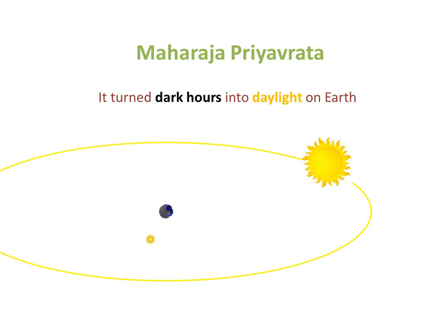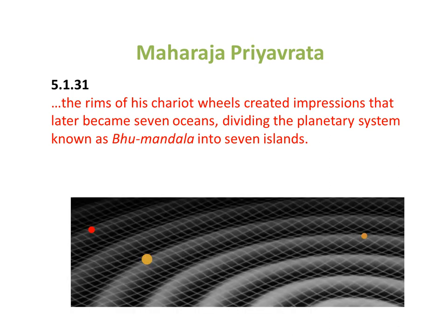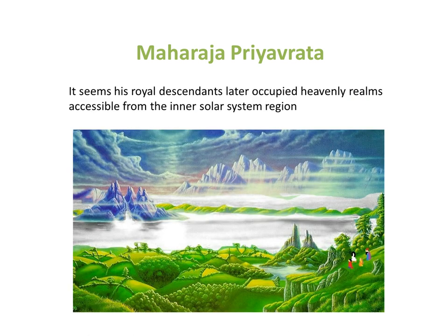That chariot turned dark hours into daylight on the Earth. His flying chariot was like a second sun. The rims of his chariot wheels created impressions that later became seven oceans, dividing the planetary system known as Bhoomandala into seven islands. It seems his royal descendants later occupied heavenly realms, accessible from the inner solar system region.